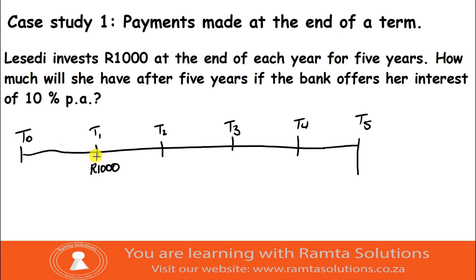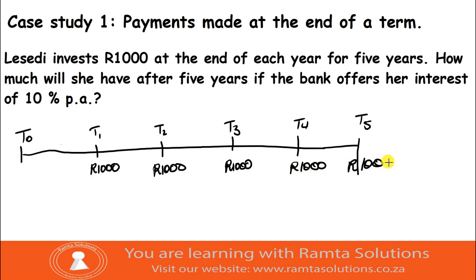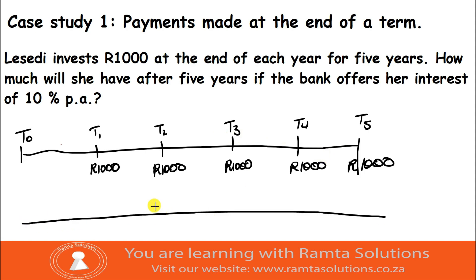The end of year one is the start of year two — at the end of year two she makes another payment. The start of year three, the end of year three — she makes another payment. She makes another payment at T4, and lastly makes a payment at T5. The interest the bank offers is 10% per annum.